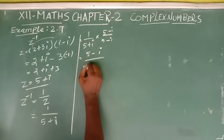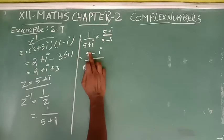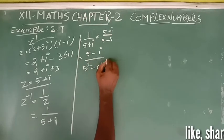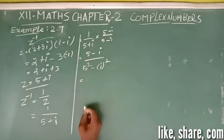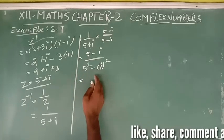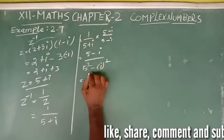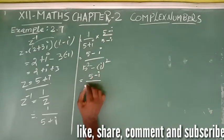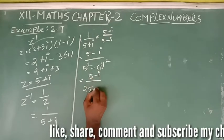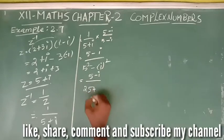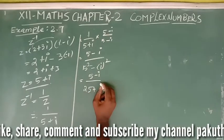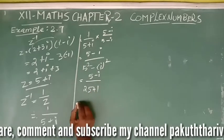Using the formula a plus b times a minus b equals a squared minus b squared, we calculate the denominator. 5 squared is 25, and i squared is minus 1, so minus minus gives plus 1. The denominator equals 26.